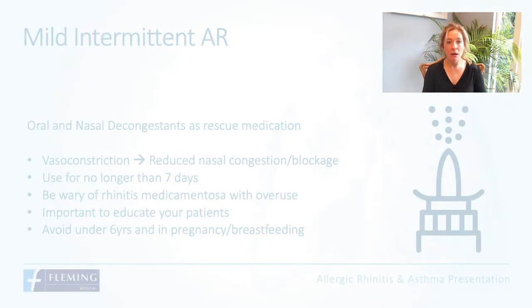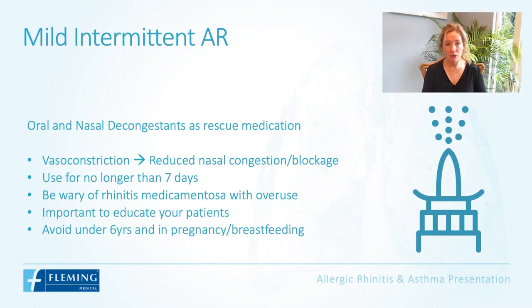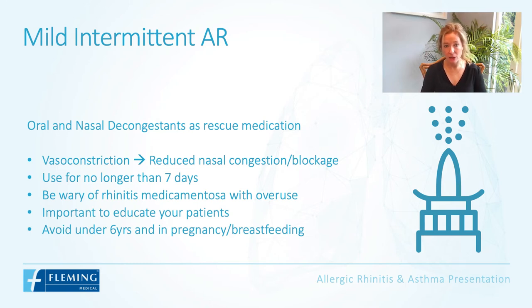Mild intermittent allergic rhinitis can initially be treated with oral or nasal decongestants purely as rescue medication. These cause vasoconstriction and reduce nasal congestion and blockage. It's important that patients are aware these should be used for no longer than five days, as overuse can result in rhinitis medicamentosa. They should not be used in children under six, or during pregnancy or breastfeeding.